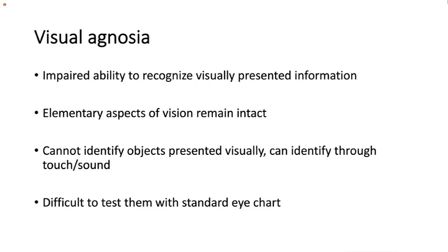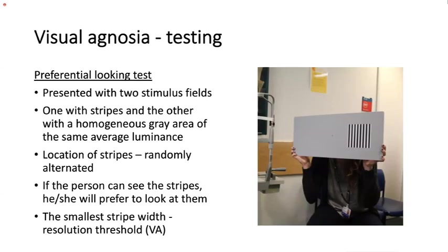A better way to test preserved visual acuity in visual agnosia is the preferential looking test: two stimulus fields are presented — one with black-and-white stripes, one with a homogeneous grey area of the same average luminance. The location of the stripes is randomly alternated. If the person can see the stripes, they will prefer to look at them. The smallest stripe width the person can locate gives the resolution threshold or visual acuity.